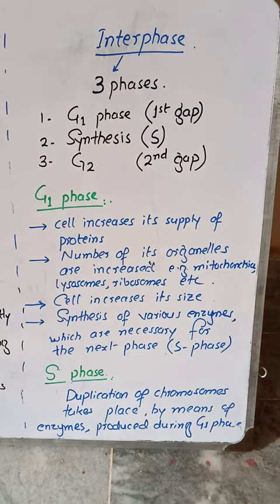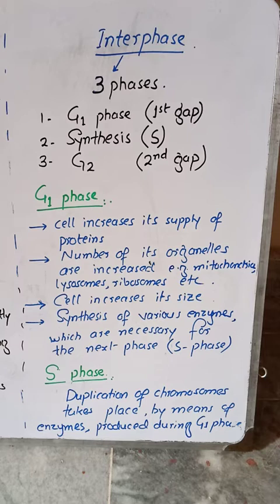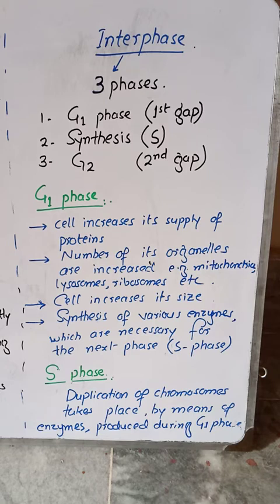Each daughter cell must contain an equal amount of organelles so that it is capable of performing its own activities later on. Additionally, synthesis of various enzymes also takes place during G1 phase, which are necessary for the next phase, which is S phase. During S phase, duplication of chromosomes takes place by means of the enzymes produced during G1 phase.